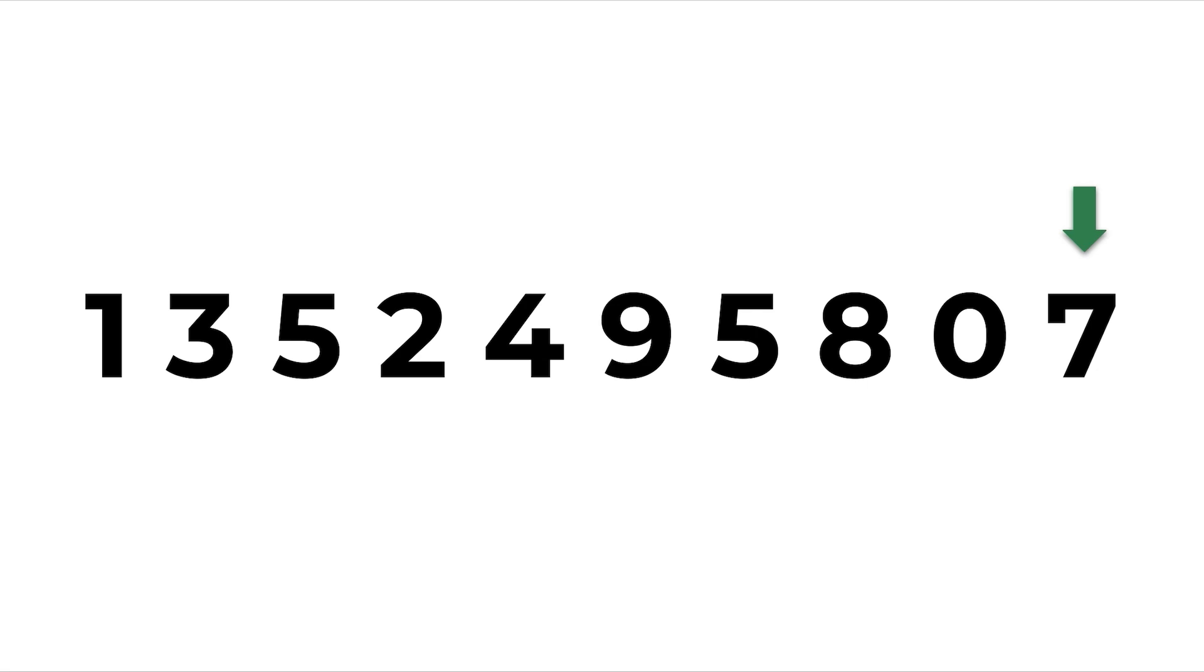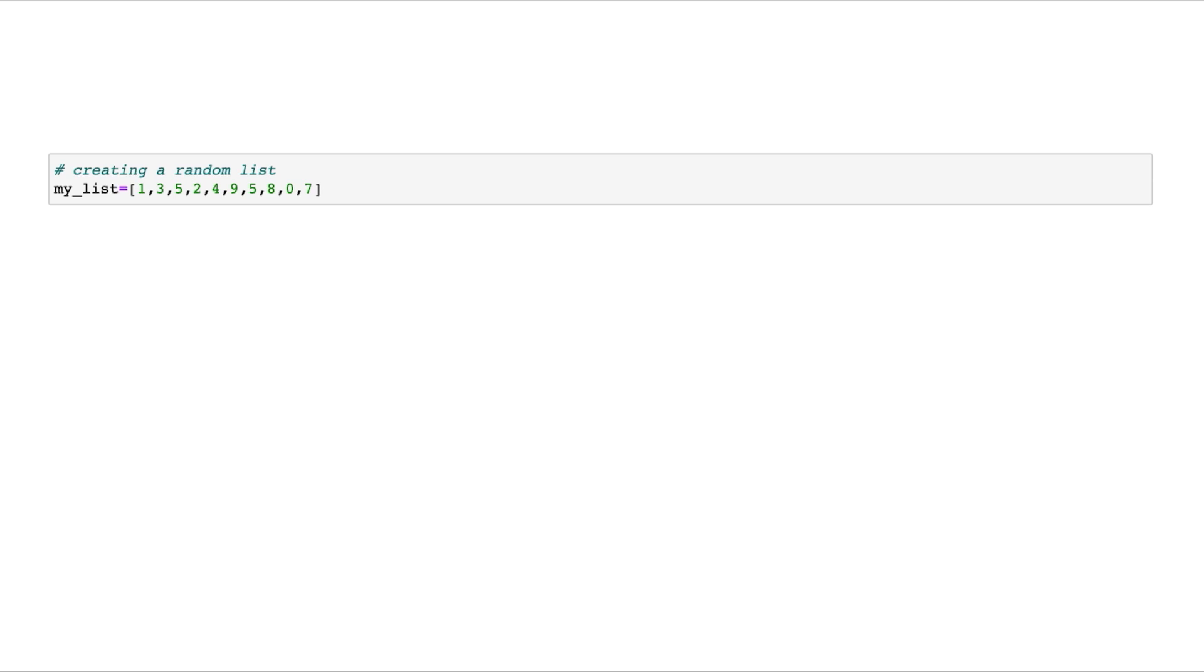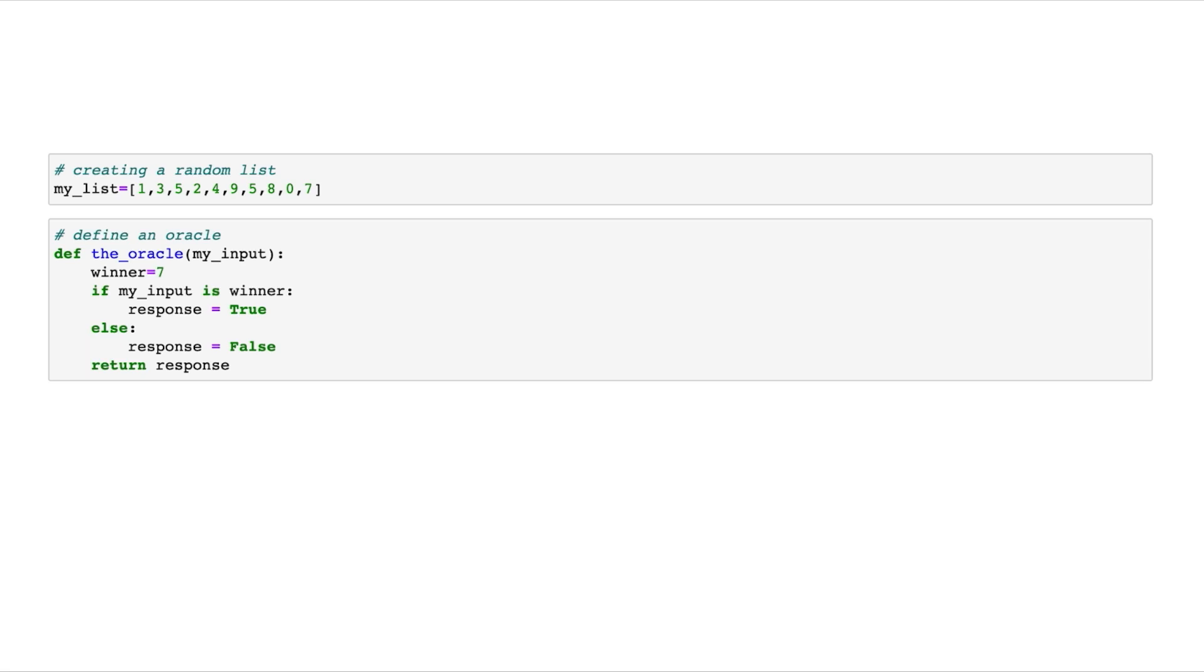Check out this list of numbers. There's 10 different variables here with differing values and one of them is a winning number, basically the one that we're looking for. A classical computer's code looks exactly like this and if none of it makes sense, don't worry at all. Essentially what's happening is the computer is given a list of numbers and then it defines an oracle, which you can think of as a black box that contains operations. The input will go in and if the oracle determines it's the winning value, it'll apply some sort of transformation or order on that variable before it outputs. Anyways, once the oracle does its job of identifying the winning value, it's outputted for the user and we can also figure out how many queries, which is another word for tries, were made.